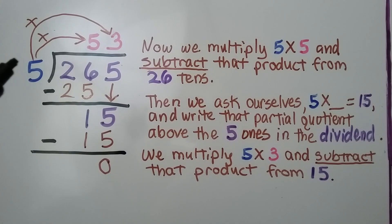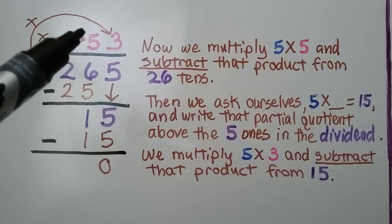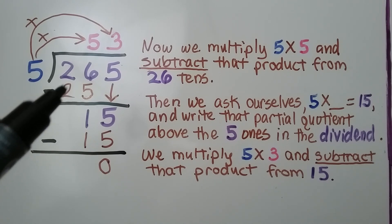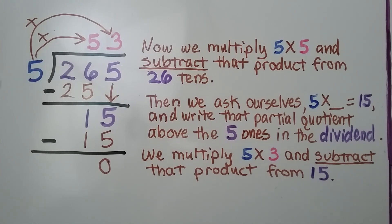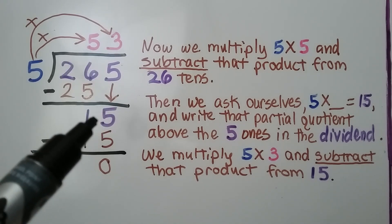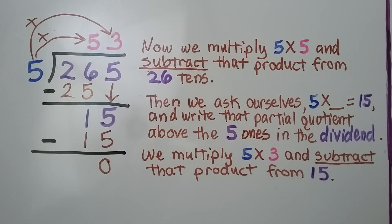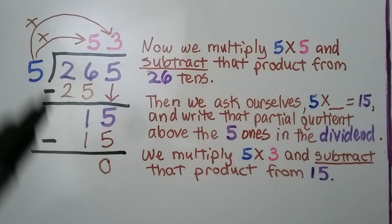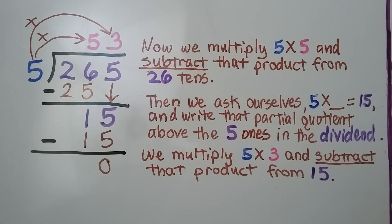We multiply the divisor by this 5 and we get 25. We subtract that product from the 26 tens. Then we have a 1 when we do our subtraction, and it's the 5's turn to come down. We ask ourselves, 5 times some number is equal to 15 — that would be 3. 5 times 3 is 15. We write that partial quotient above the 5 ones in the dividend. We multiply 5 times 3, subtract that product from 15, and we have 0.